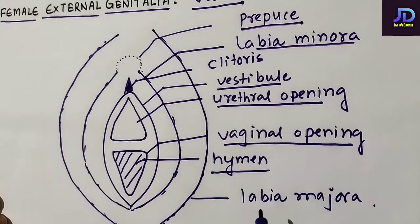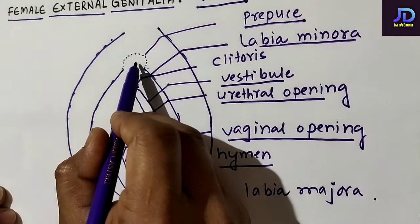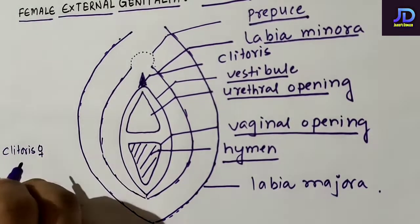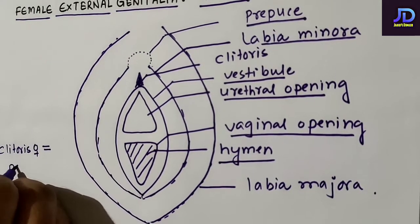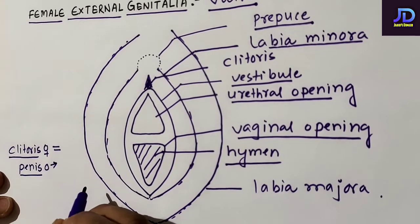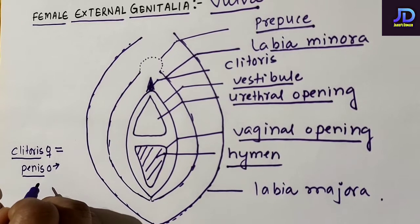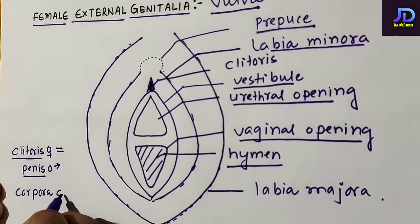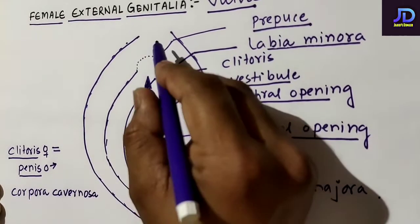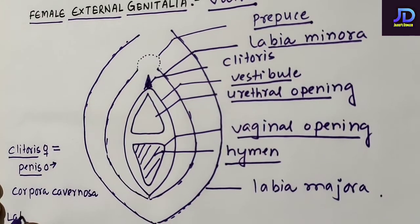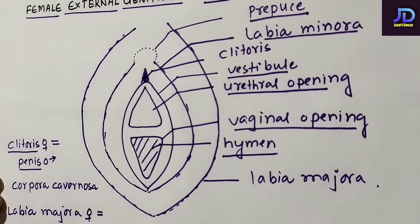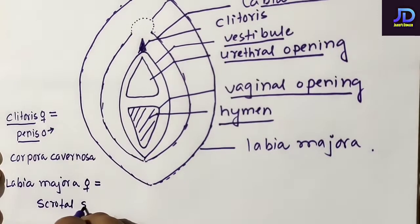We will mention some homologous organs. Clitoris in the female reproductive system is homologous to the penis in the male reproductive system. Homologous means they are made up of the same erectile tissue — both clitoris and penis are made up of corpora cavernosa. Another pair of homologous organs: labia majora in the female is homologous to the scrotal sac in the male.